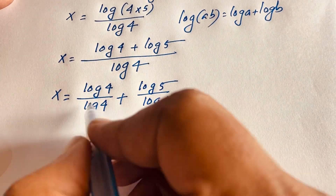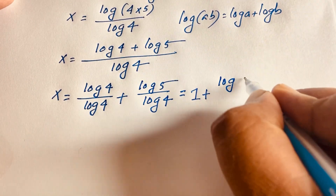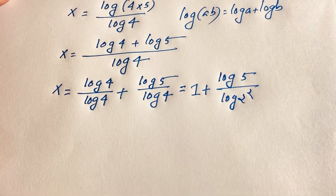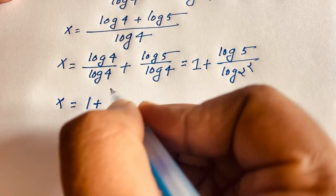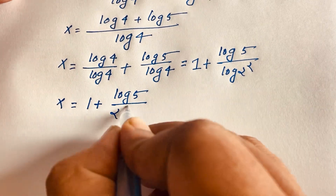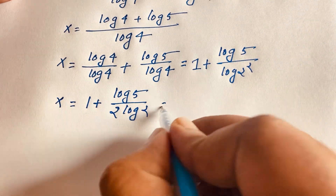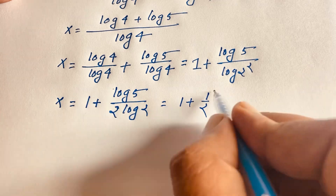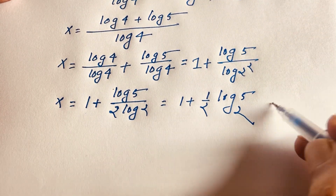Then log 4 over log 4 cancels to 1. And I notice that log 4 equals log 2 squared, which equals 2 log 2. So x is equal to 1 plus log 5 over 2 log 2, which simplifies to 1 plus one-half log base 2 of 5. This is our final simplified answer.